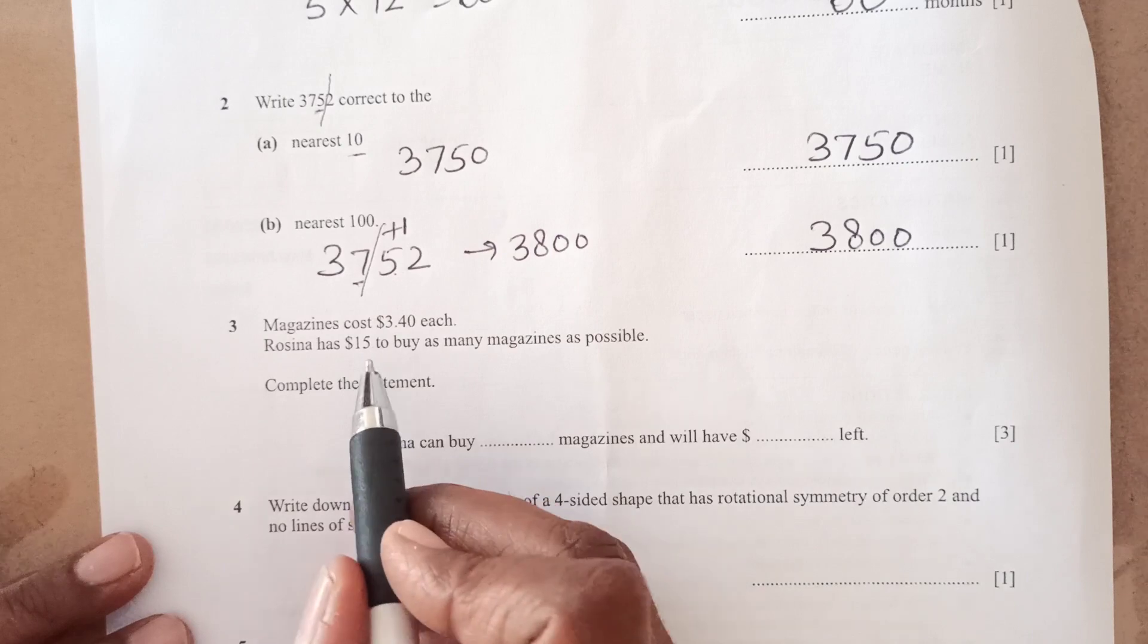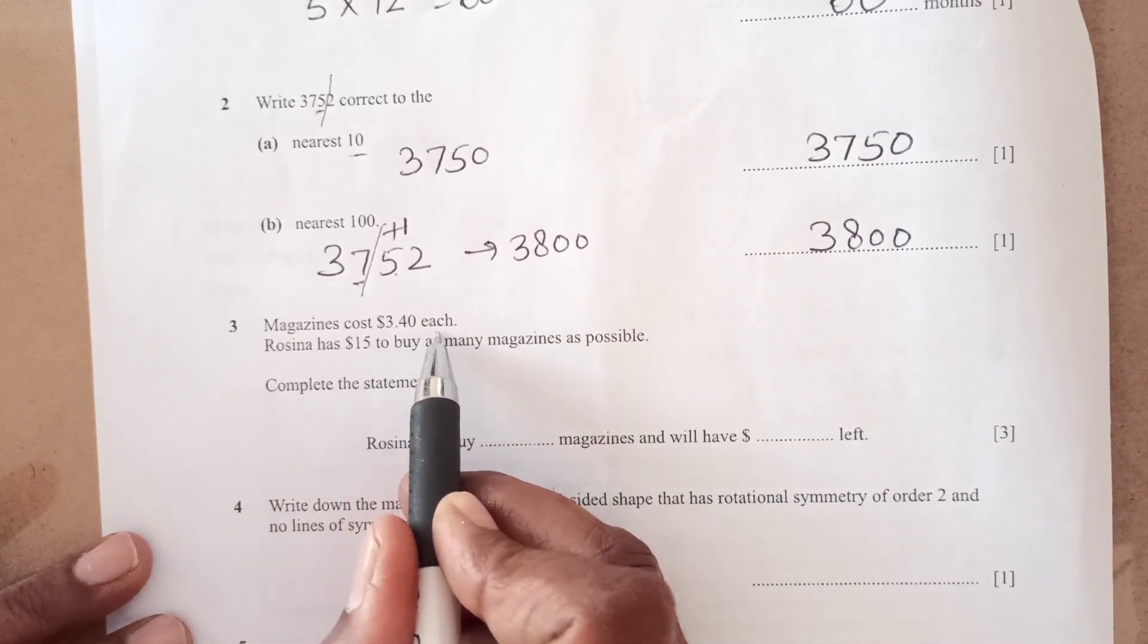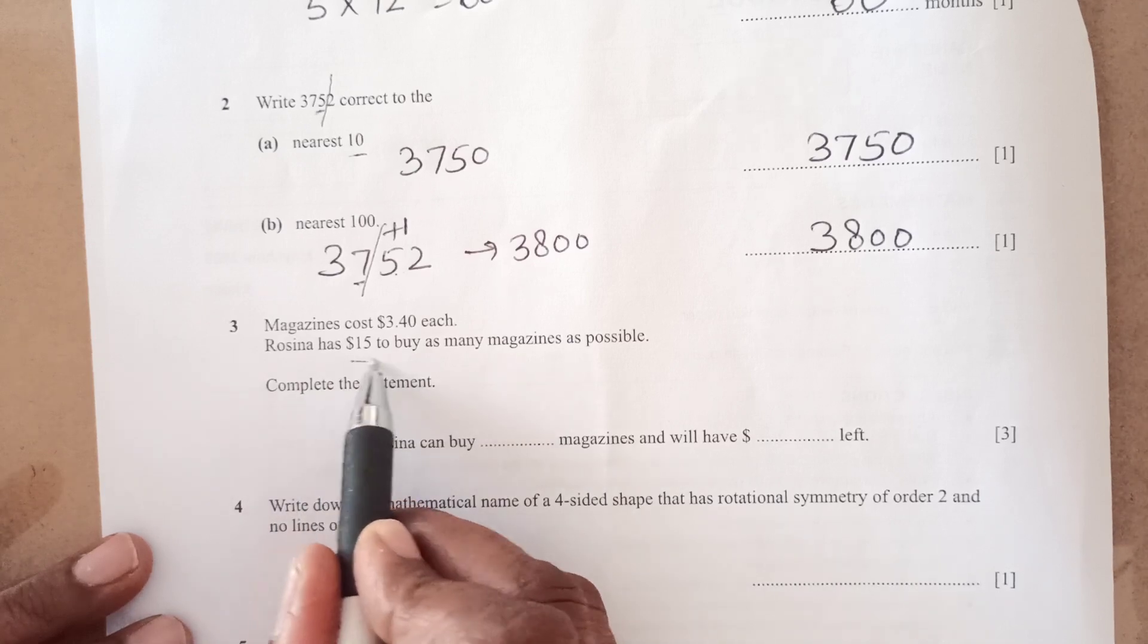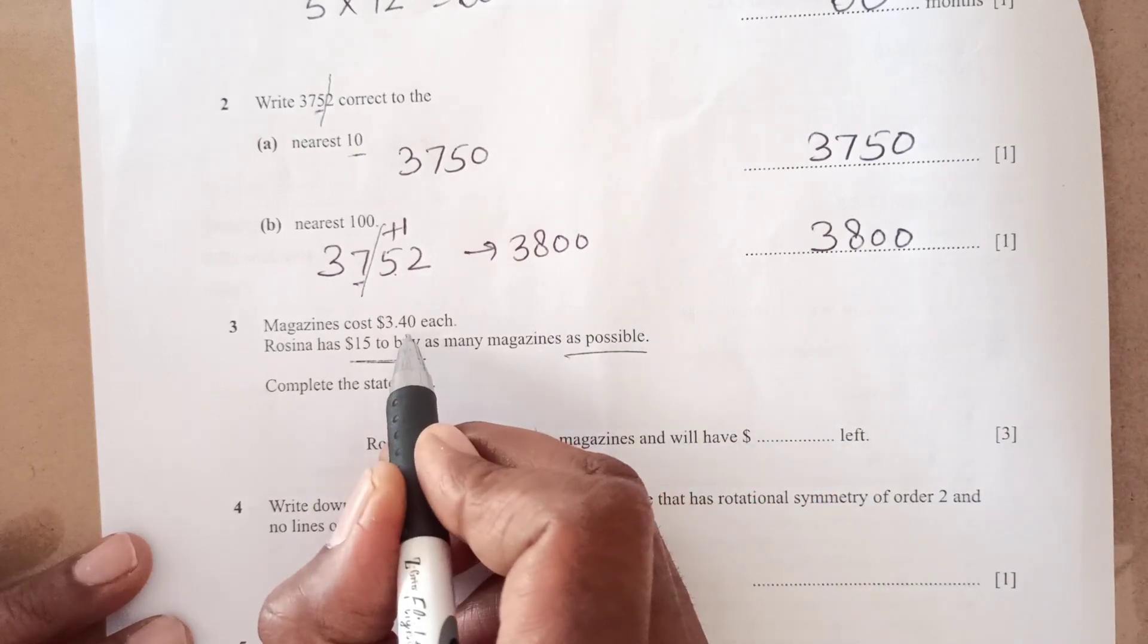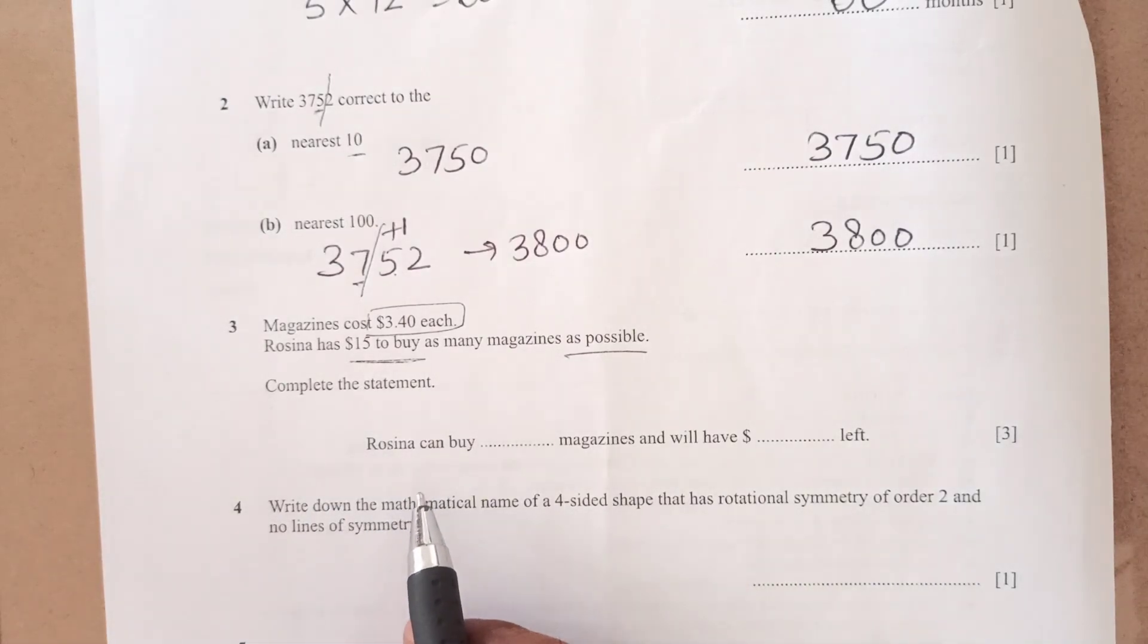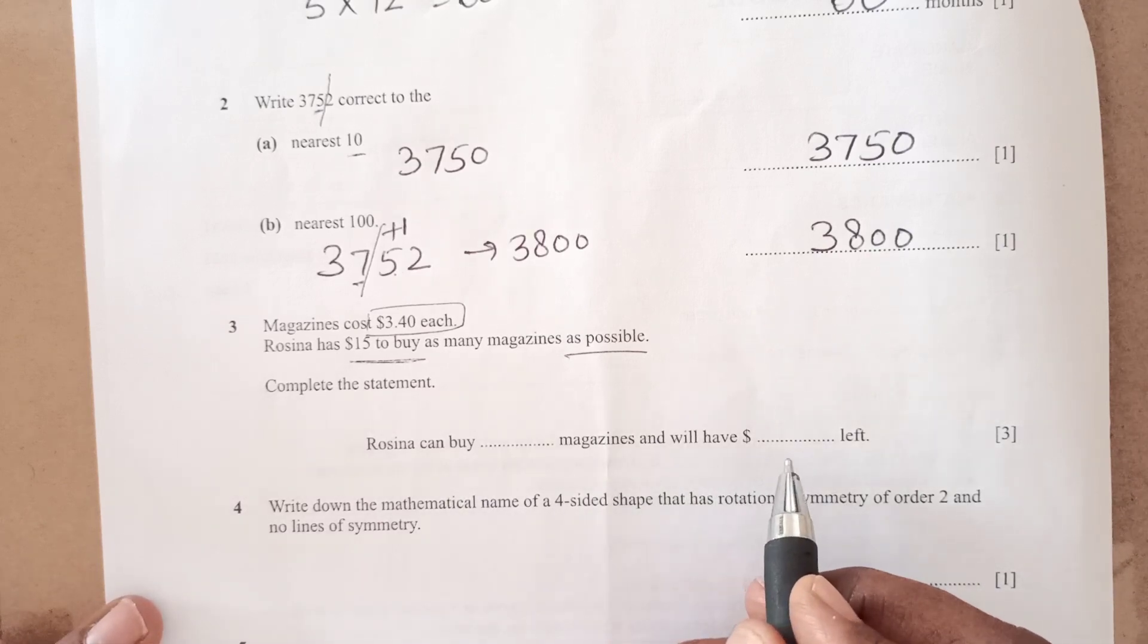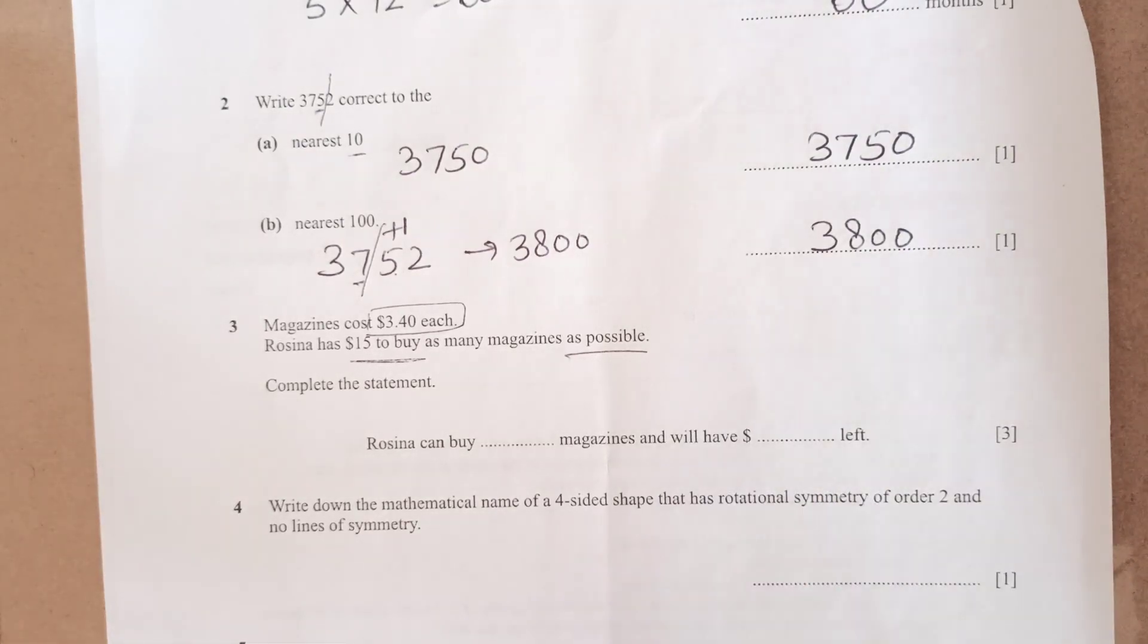Now, number 3, magazines cost $3.40 each. Rosina has $15 to buy as many magazines as possible. One magazine cost $3.40, complete the statement. Rosina can buy how many magazines and will be left with some money.